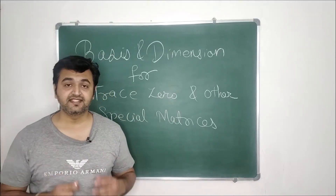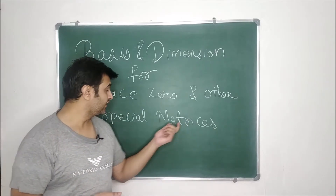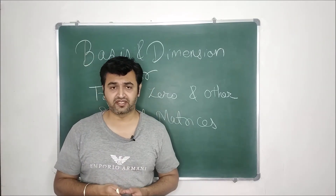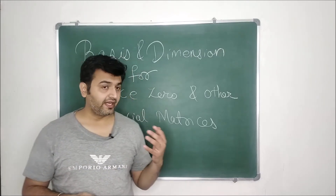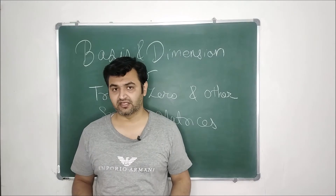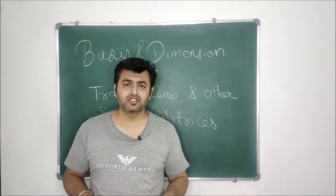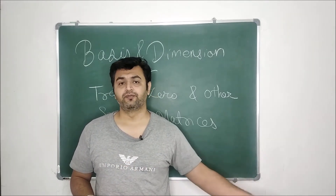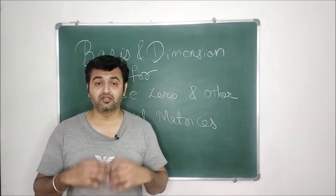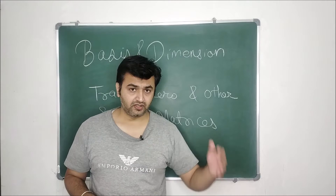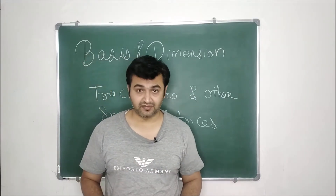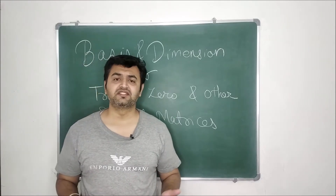Today we are going to see the basis and dimension for trace zero matrices and other special matrices. Trace zero means the sum of the diagonal entries is zero. If you have that collection of matrices, what is the basis and the dimension? Similarly, if you have a collection of all matrices whose sum of the first row is zero, or whose third row is zero, or whose first or fourth column is zero — the same trick will work, and all have the same dimension.